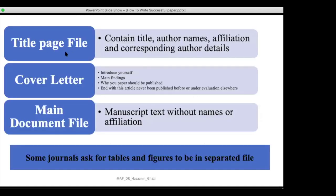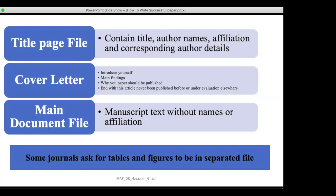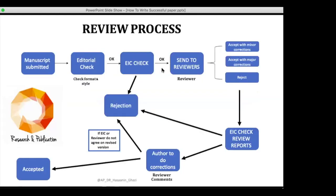The title page contains the title, author names, affiliations, and corresponding author details. It is kept separate from the manuscript to ensure blind review, so reviewers do not know your name or affiliation. The cover letter introduces yourself, states the main findings, and essentially sells your paper to the journal. End the cover letter by stating that the article has not been published before or is under evaluation elsewhere. The main document should be manuscript text without names or affiliations.